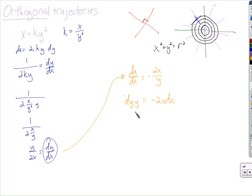So we take the anti-derivative on this side. It's one-half y squared. And this would be negative x squared plus c. I'm just double checking here.